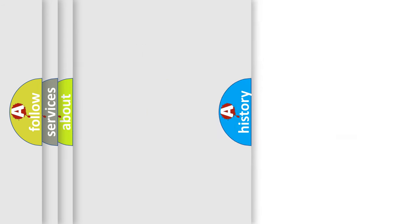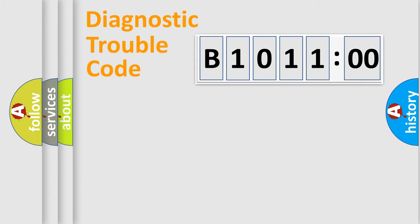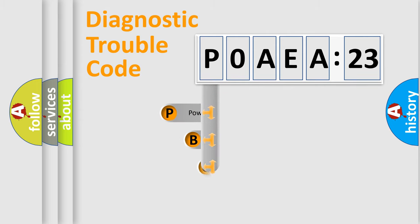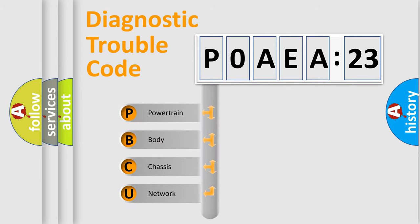We divide the electric system of automobile into four basic units: Powertrain, body, chassis, and network. This distribution is defined in the first character code.